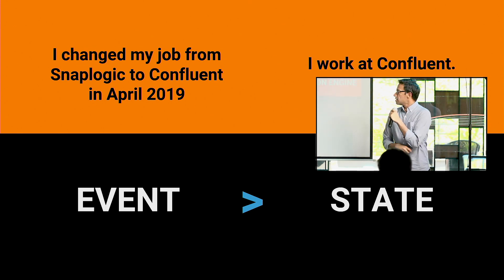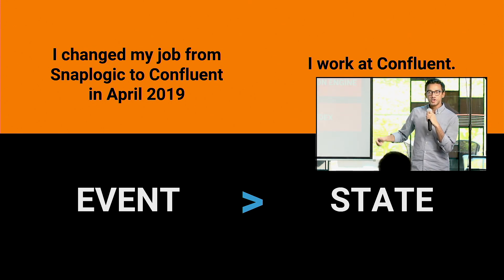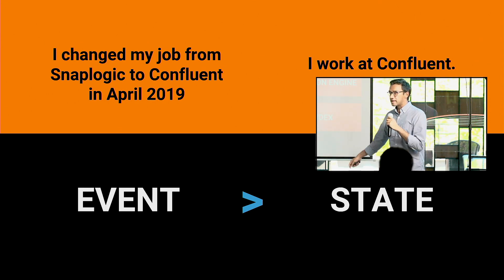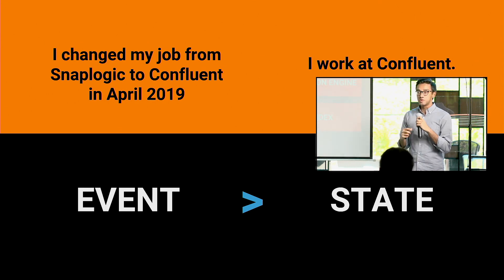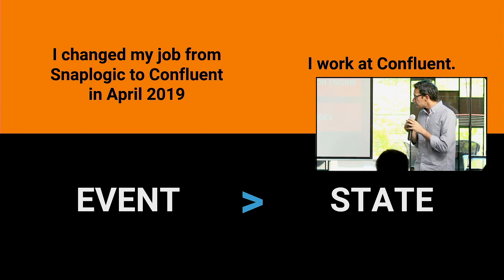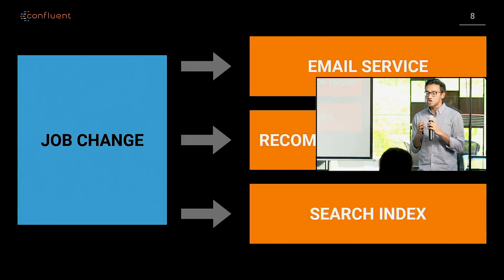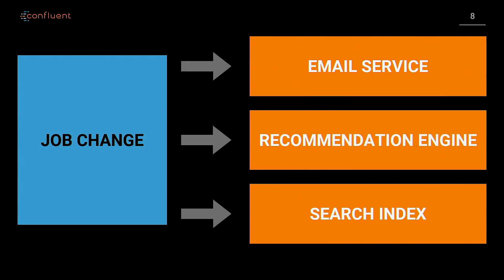The big advantage of using events is it lets other applications interpret those events in various different ways. For example, that same job change event can be interpreted in three different ways: an email service that could stop sending job notifications, a recommendation engine that stops suggesting certain kinds of jobs, or a search engine that suggests various other kinds of jobs. Each of these is interpreting that event in different ways, and that's basically what an event-based system allows you to develop.